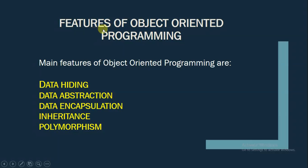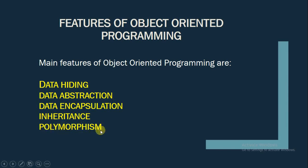Let us understand the features of object oriented programming. The main features of object oriented programming are data hiding, data abstraction, data encapsulation, inheritance, and polymorphism.